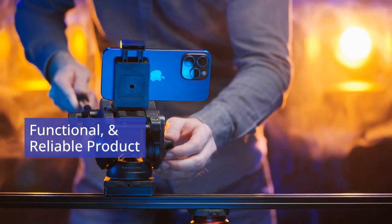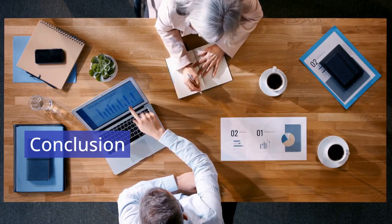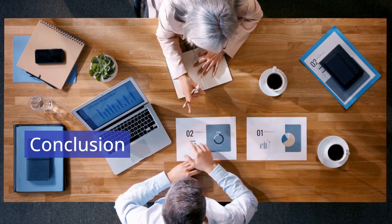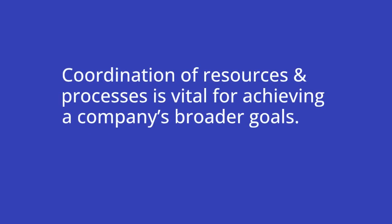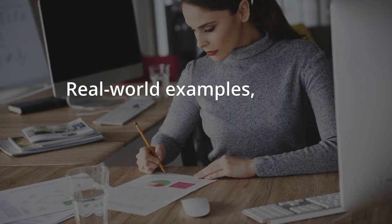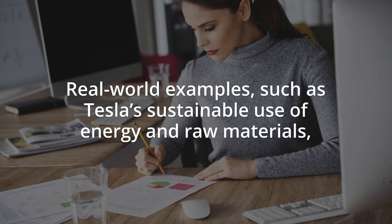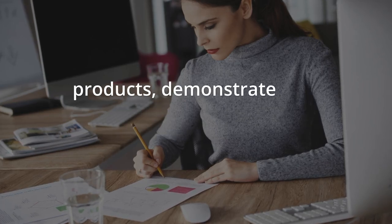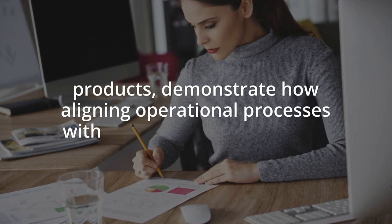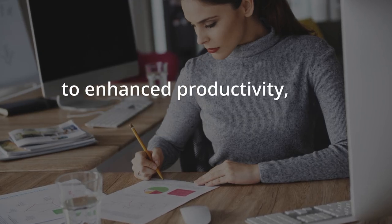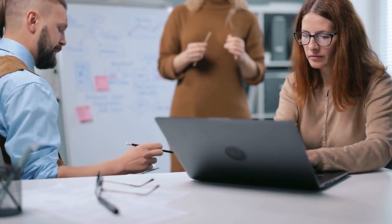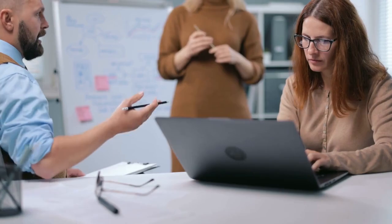In conclusion, an operations system is the backbone of any business, ensuring that inputs such as materials, labor, and capital are efficiently transformed into outputs that meet customer expectations. The coordination of resources and processes is vital for achieving a company's broader goals. Real-world examples such as Tesla's sustainable use of energy and raw materials, Toyota's lean manufacturing to reduce waste, and Apple's focus on producing high-quality products demonstrate how aligning operational processes with strategic objectives leads to enhanced productivity, cost efficiency, and customer satisfaction. An optimized operations system is essential for maintaining competitiveness and driving long-term success.